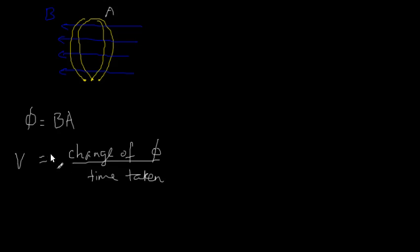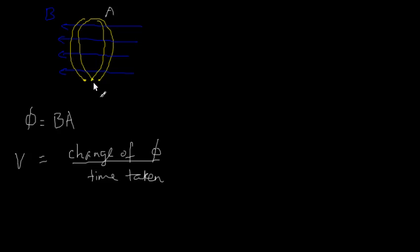If you think of the induced voltage as like a battery, then each loop would be like a battery. Now that we have two loops connected in series, it's like having two batteries connected in series. So it's only reasonable to expect that the induced voltage would be doubled.